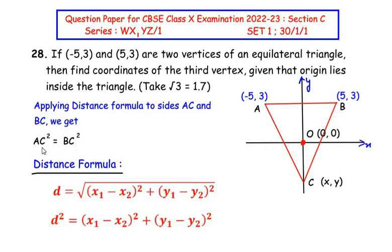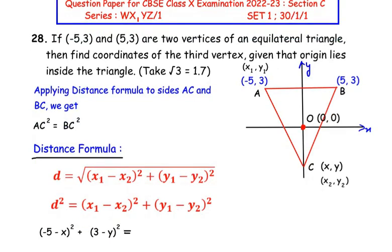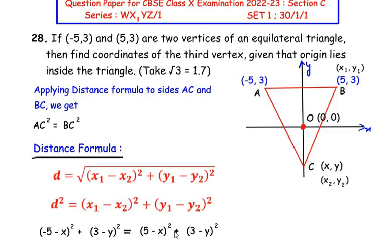For side AC, we take (x1, y1) as (-5, 3) and (x2, y2) as (x, y). So AC² = (-5 - x)² + (3 - y)². Applying the distance formula to side BC, taking (x1, y1) as (5, 3) and (x2, y2) as (x, y), we get BC² = (5 - x)² + (3 - y)².